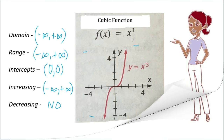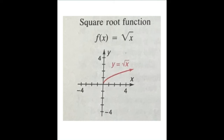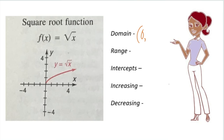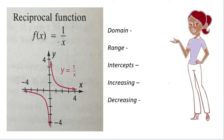The parent function of the square root function: the domain along the x-axis starts at zero and goes to positive infinity. The range along the y-axis also starts at zero and goes to positive infinity. The intercept is (0, 0). Starting at zero zero, it increases to positive infinity. Starting from the upper left going down — there is no decreasing in this parent function of the square root function.